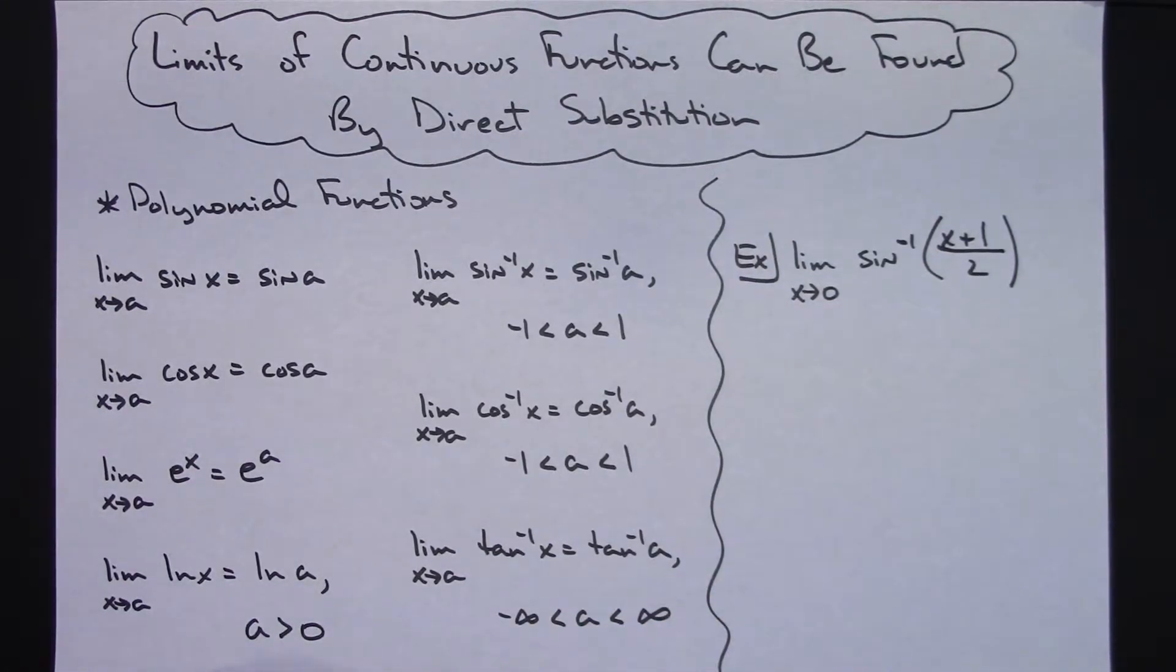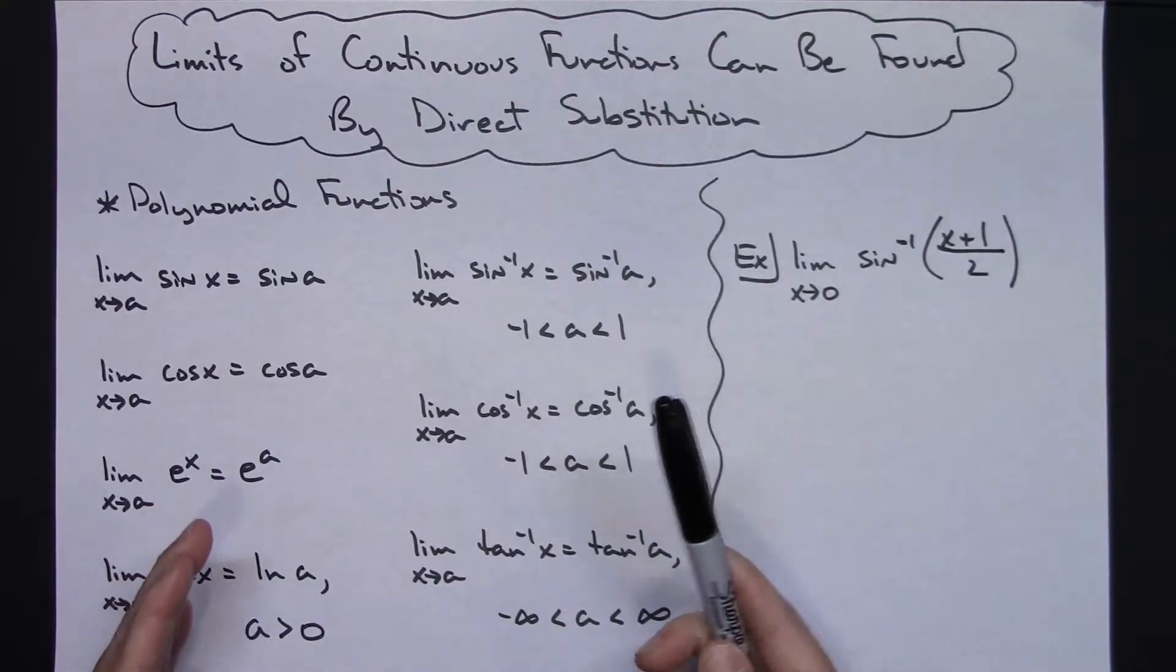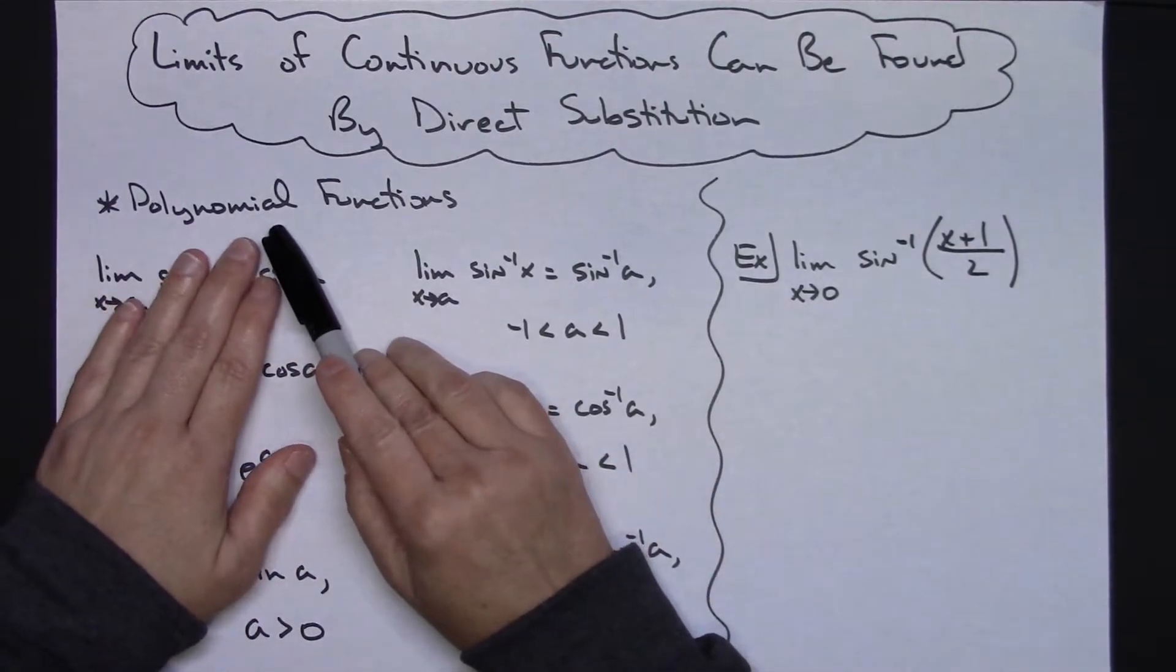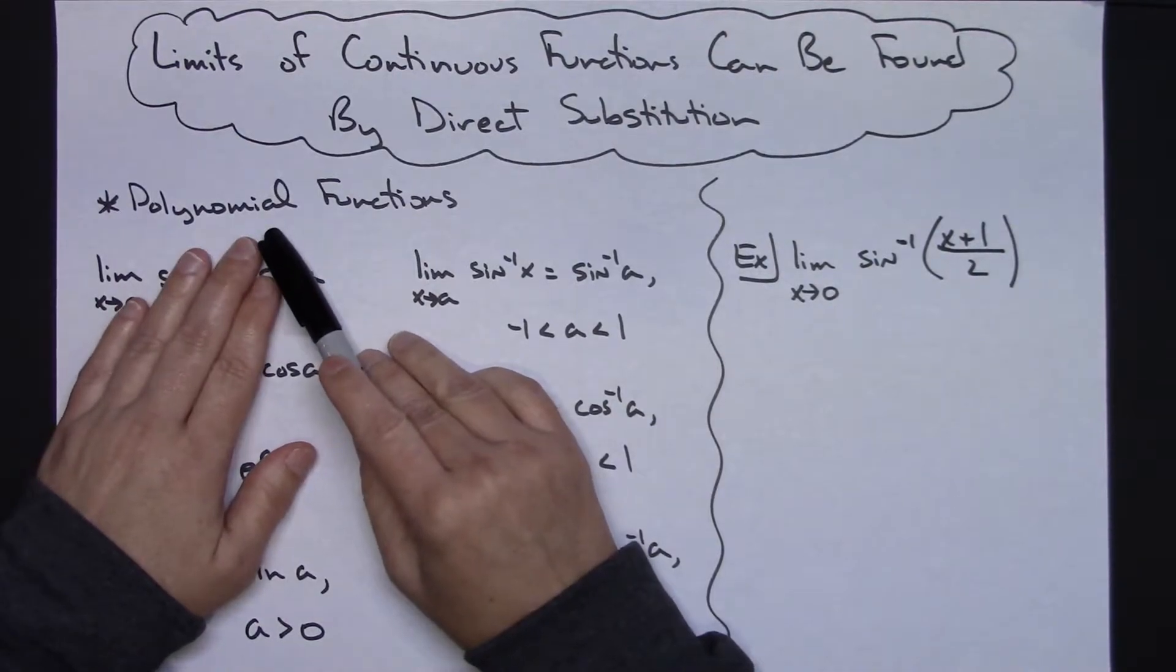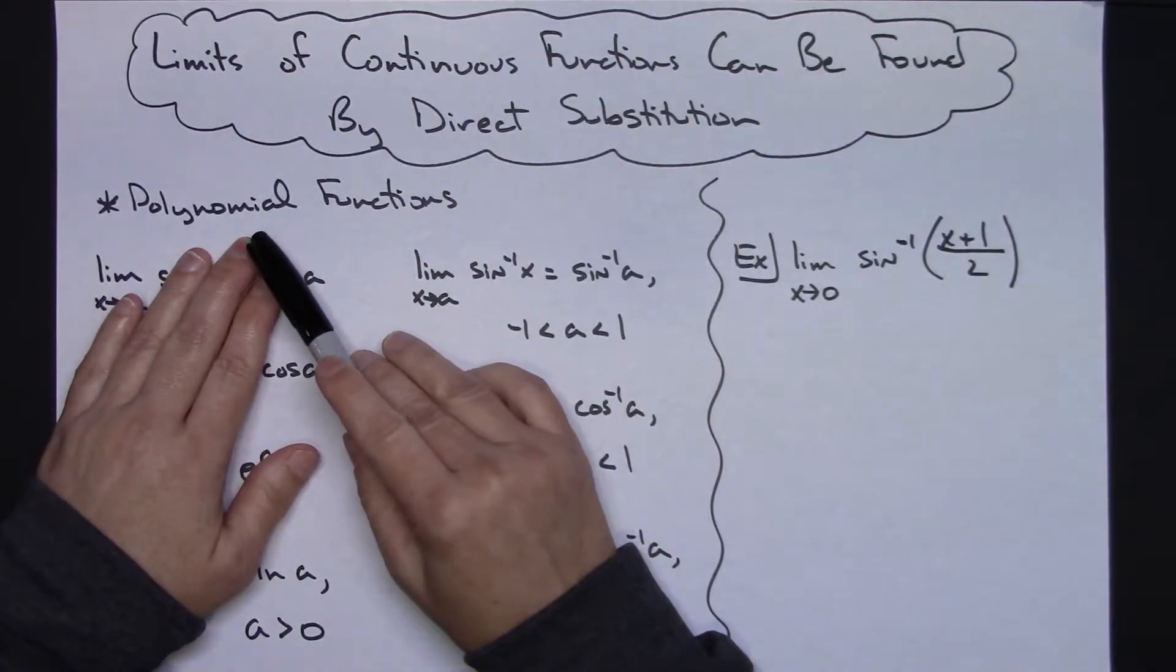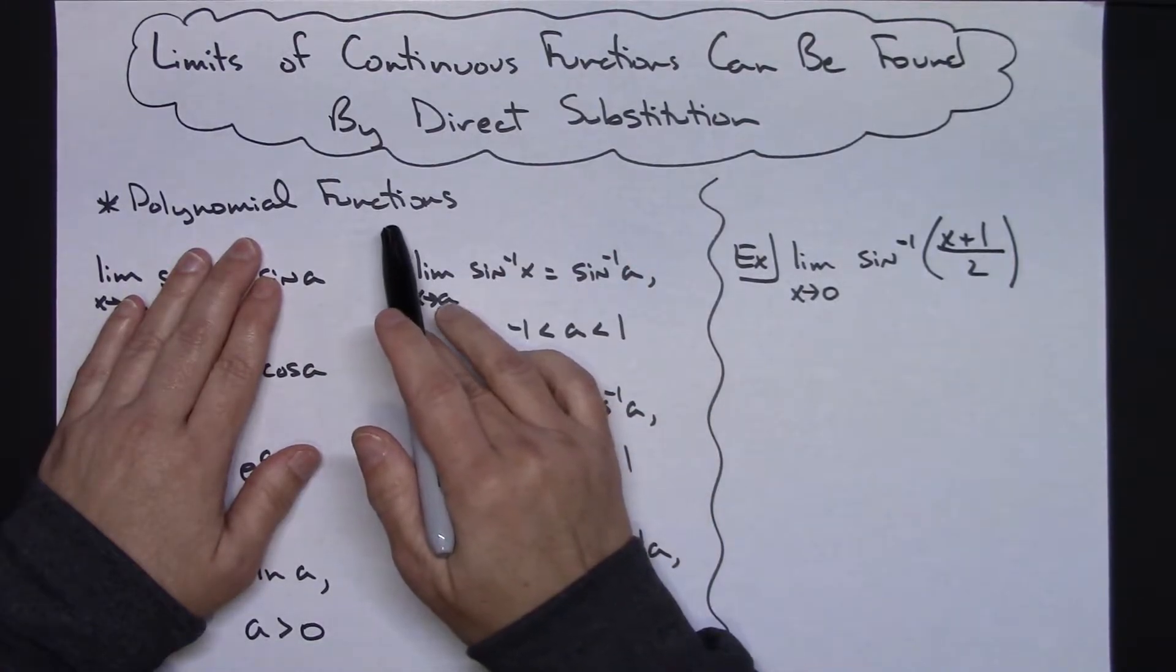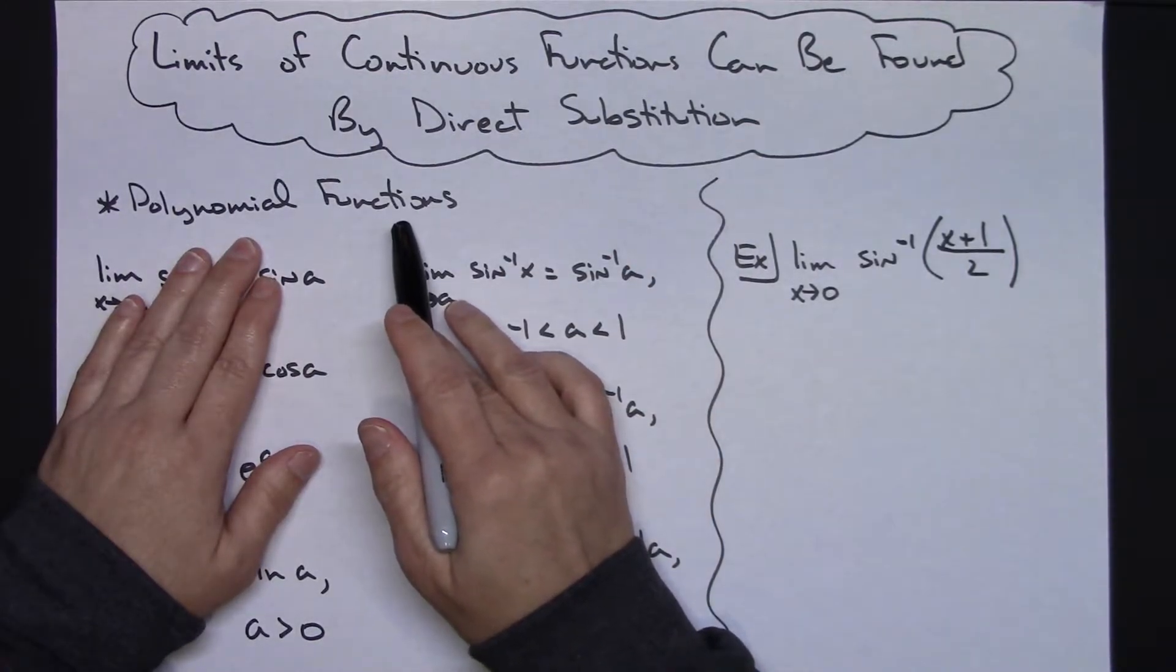In this video, I'm going to emphasize that you can find the limit of continuous functions by using direct substitution. The easiest and probably one of the first things you do is start finding the limits of polynomial functions, and you do that with direct substitution because polynomial functions are smooth and continuous and go on forever and ever in both directions. That's what they introduce you to.